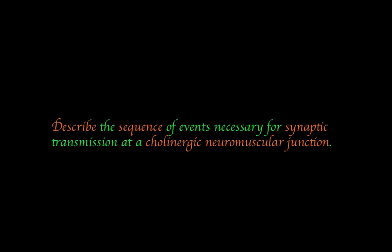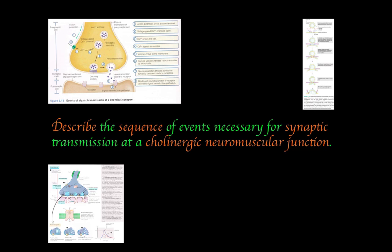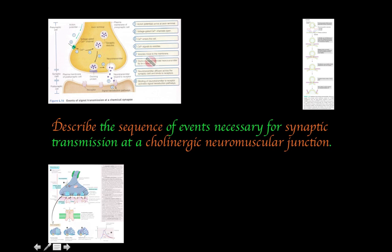The question now is: describe the sequence of events necessary for synaptic transmission at a cholinergic neuromuscular junction. To answer this well, you need to combine all the details we discussed — the basic steps, the V-SNARE and T-SNARE protein fusion mechanism, and the nicotinic receptor details — into one comprehensive stepwise answer. Get your pen and paper and try it.